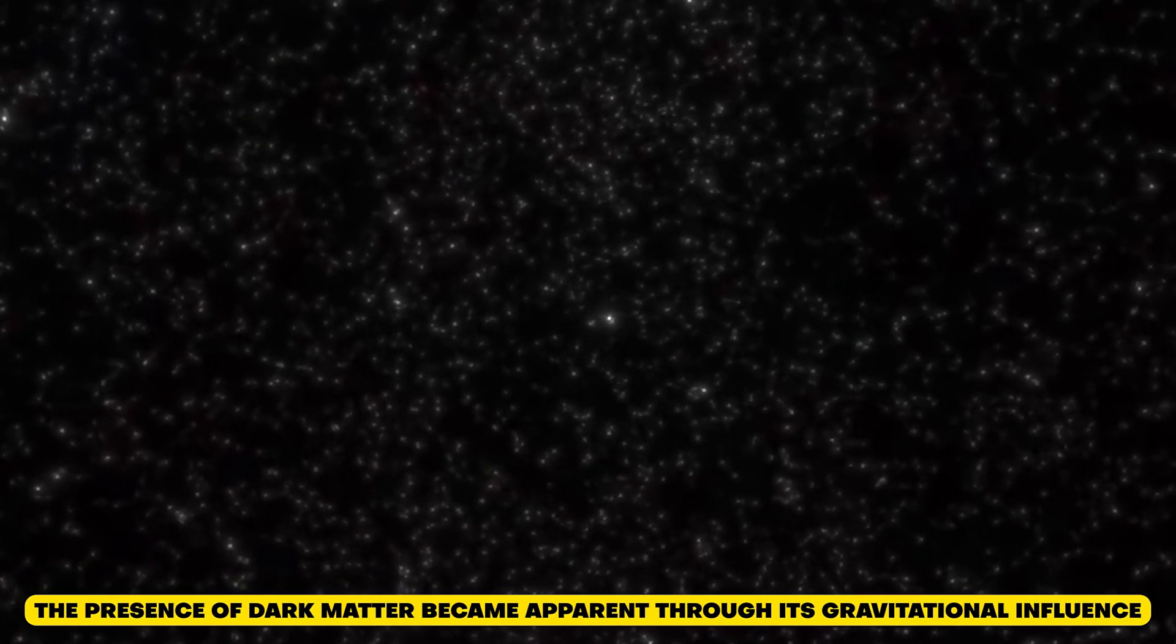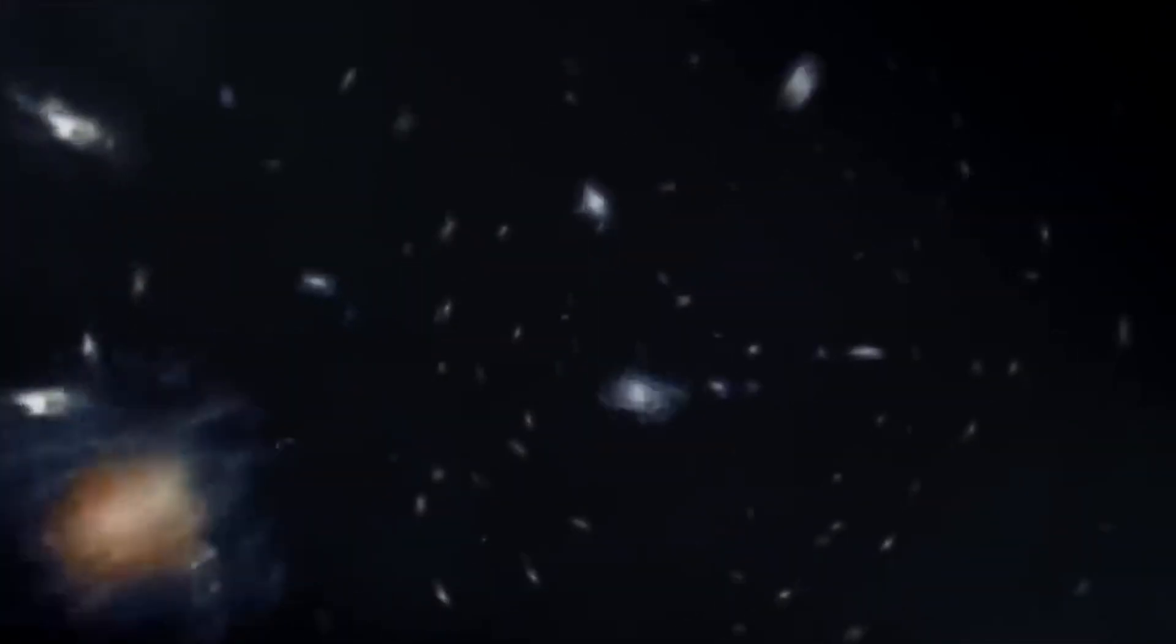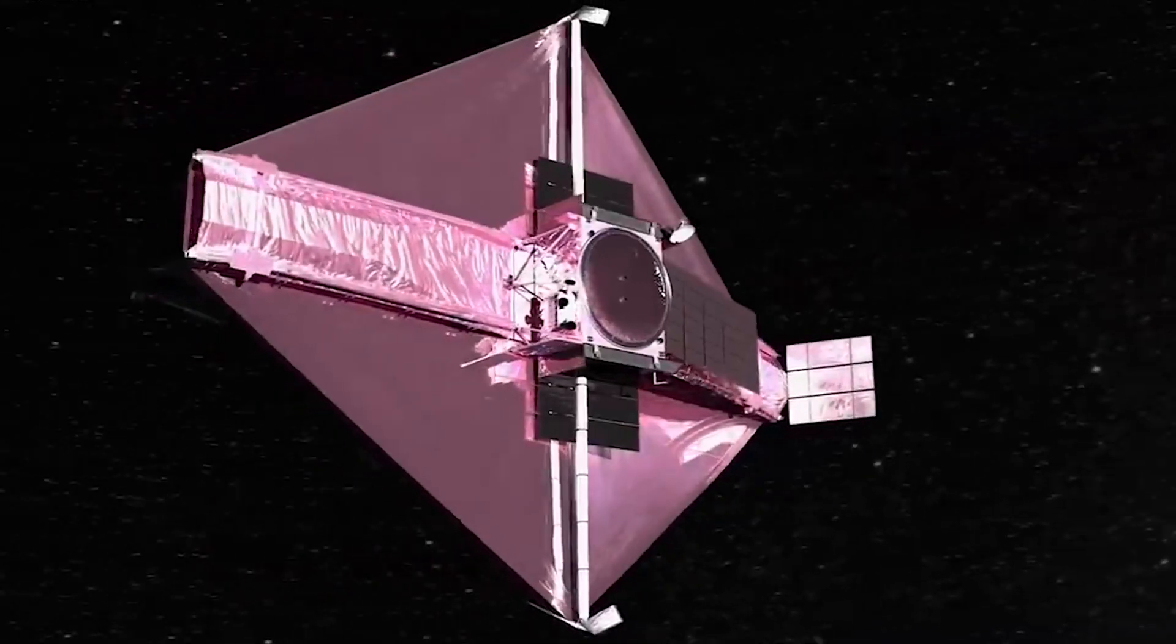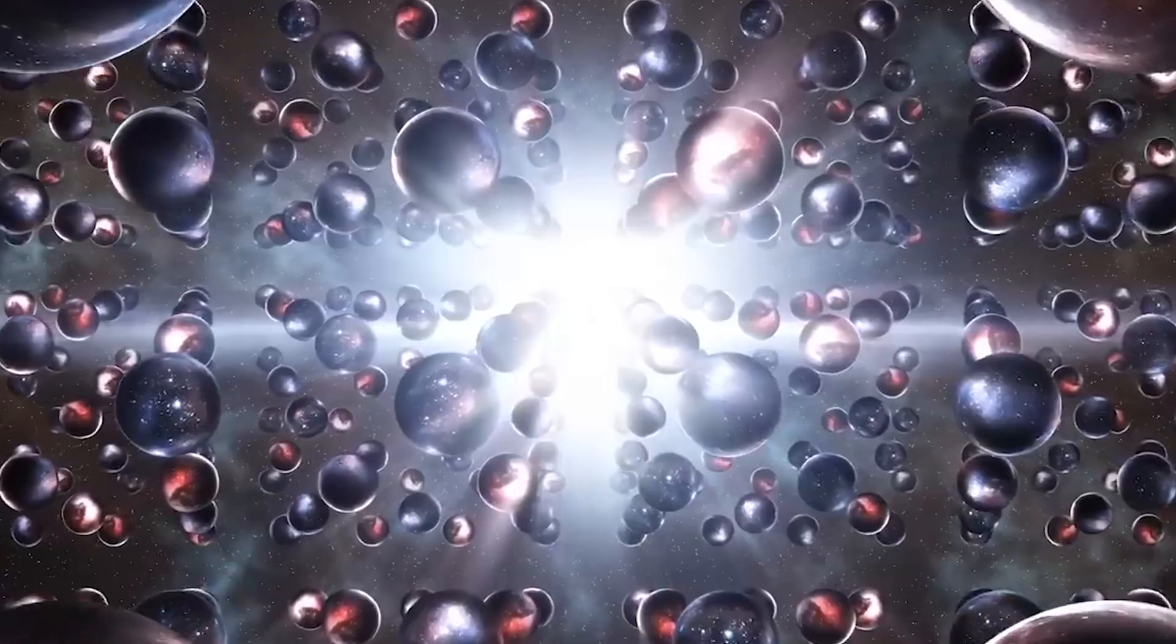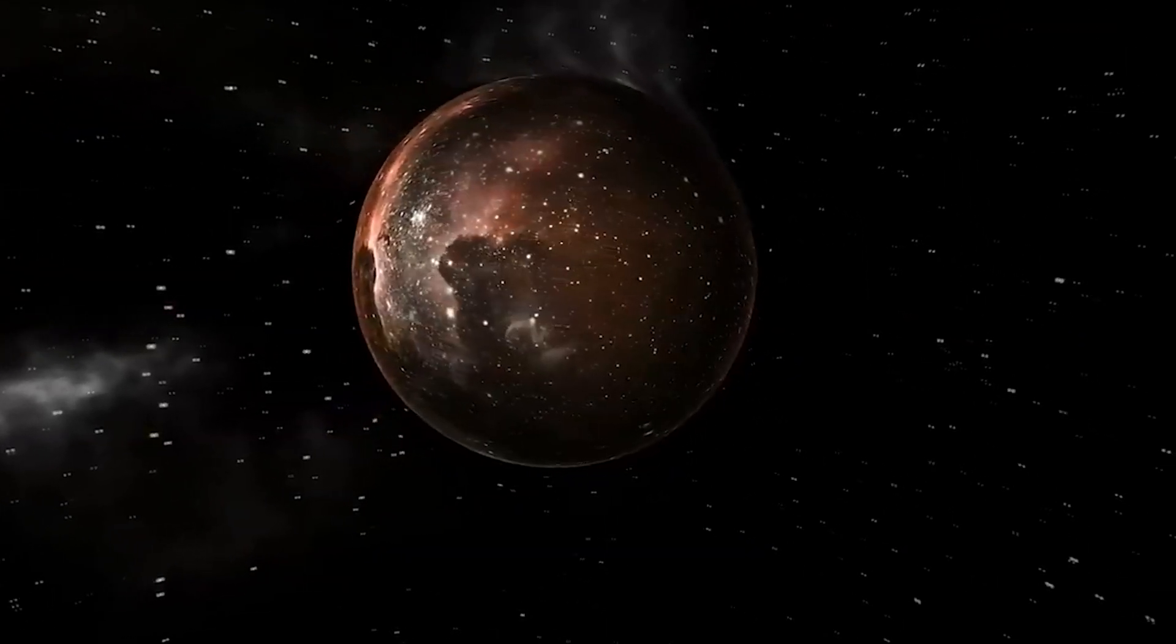The presence of dark matter became apparent through its gravitational influence. It is believed to make up approximately 85% of the total matter in the universe, while visible matter accounts for only about 15%. This means that dark matter is the dominant form of matter in the cosmos.